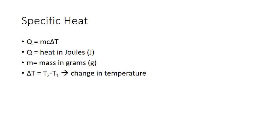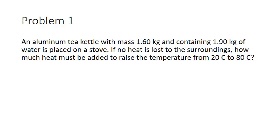This is a basic review of specific heat and how you can do some common specific heat problems. The equation most related to it is q = mcΔT. q is heat in joules, m is mass in grams, and ΔT is a change in temperature from one temperature to another.